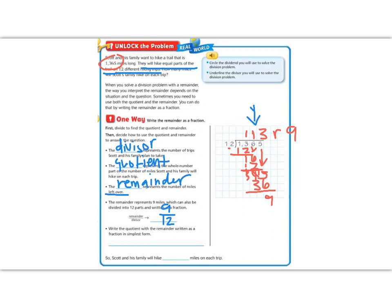Write the quotient with the remainder written as a fraction in simplest form. So that would be 113 and 3 fourths. And I changed from 3 fourths from 9 twelfths because 3 can go into 9 three times. And 3 can go into 12 four times. So I got the simplest form, 3 fourths. So each day, if they hike 3 fourths of a mile, instead of having a leftover, they can make it up on their 12 days. So each day, his family is going to hike 113 and 3 fourths of a mile.